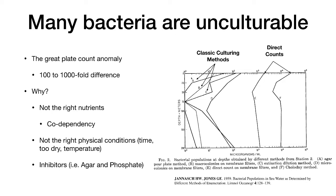Finally, another reason: there may be inhibitors in the medium. A paper in 2014 by Tanaka et al. from Akita University in Japan demonstrated that autoclaving phosphates with agar, which is a common practice, can create toxic products that inhibit bacteria. Today, microbiologists are getting better at culturing bacteria, but we have a long way to go.